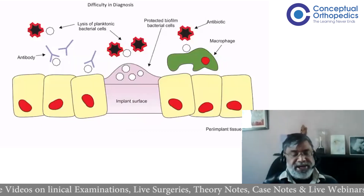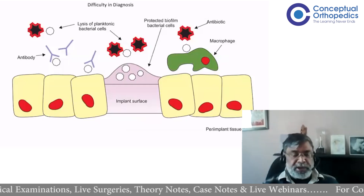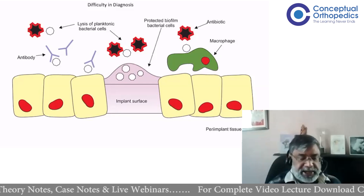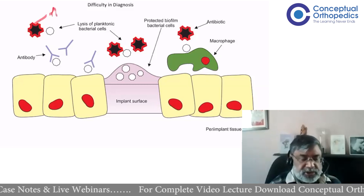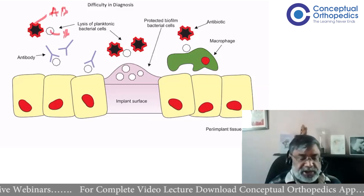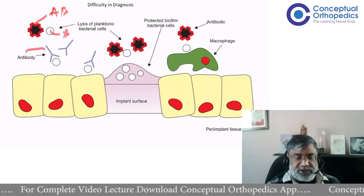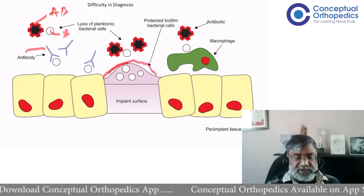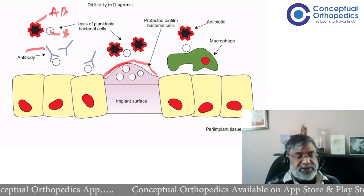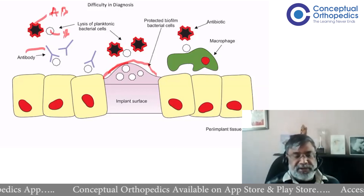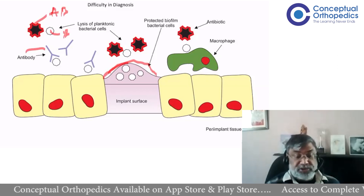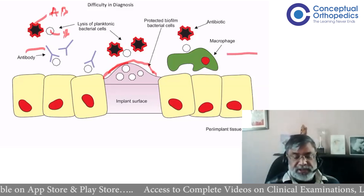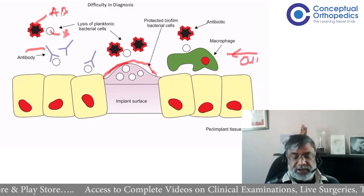Why is this infection so difficult to diagnose? If you have planktonic bacteria, they can be attacked by antibiotics, antibodies, and macrophages. But once they form the protective colony, the host reaction to the bacteria is not happening, so you don't produce many inflammatory markers — CRP levels are not very high, making it difficult to diagnose. Also, because the bacteria form a colony and adhere to the implant, if you aspirate the joint it is difficult to culture.